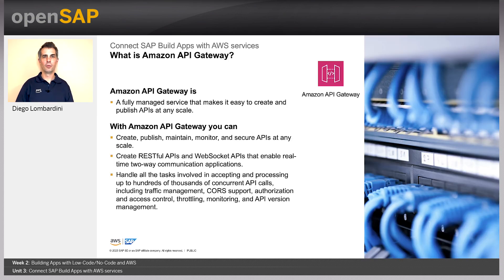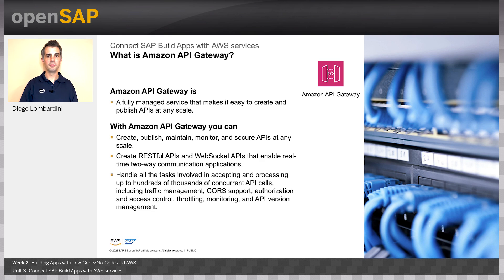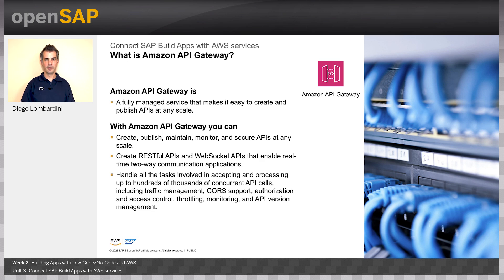What is Amazon API Gateway? As we briefly covered in Unit 1, APIs are the entry door for your service architectures. With Amazon API Gateway, you can manage and create all your APIs for enterprise — both for AWS services as well as external APIs. It is very simple to expose AWS services as APIs using Amazon API Gateway. You can manage versions, security, access management, monitoring, throttling, and quota management. It supports both RESTful APIs as well as WebSockets APIs.